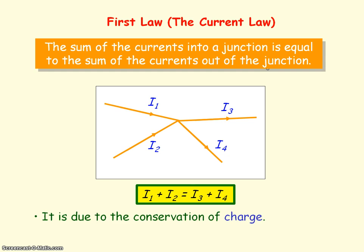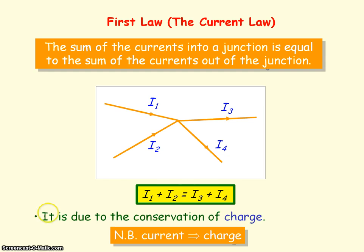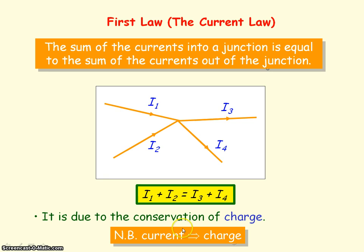Kirchhoff's first law is due to the conservation of charge. And if you remember the definition of current, it is the rate of flow of charge. So at a junction, the same amount of charge that enters the junction will equal the same amount of charge leaving the junction, so the total charge will remain constant.